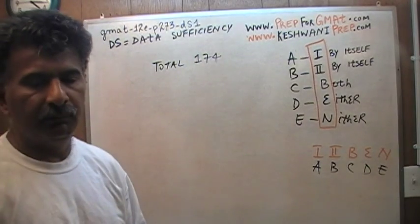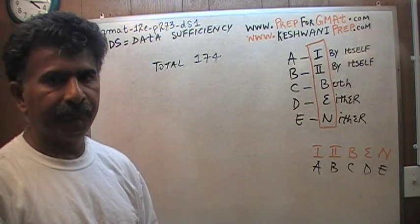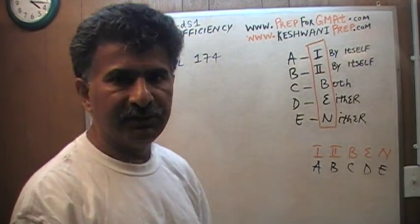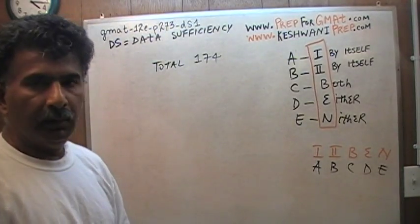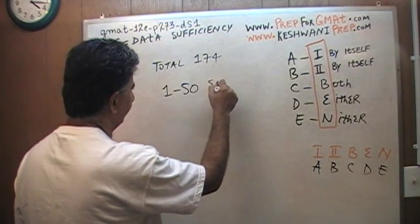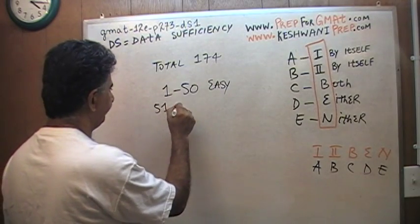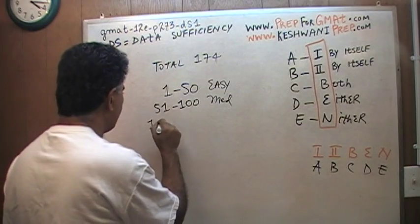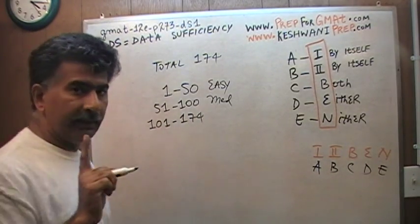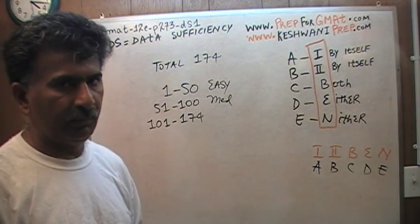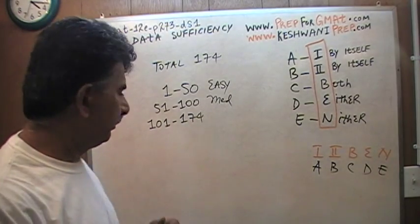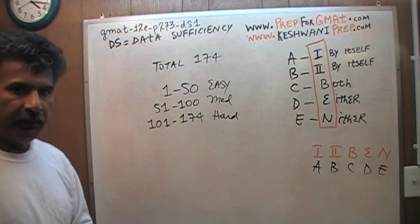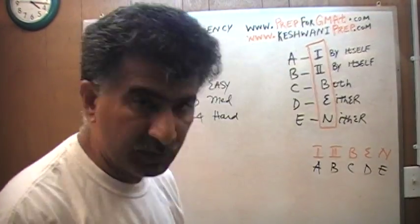I am going to give you a quick overview of my opinion — and it is just an opinion, some people might disagree. Through my experience — I have been at it for 20 some years, I started teaching prep courses in 1989 — I think the first 50 questions are quite easy, 1 through 50. Questions 51 through 100 are what I would call medium. And 101 through 174 — for a person of average background, not someone very good in algebra — are hard questions. I am going to record all of them, gradually but surely.